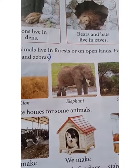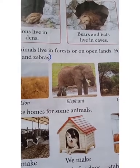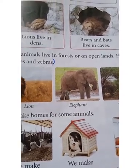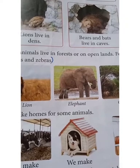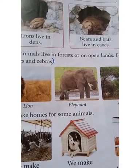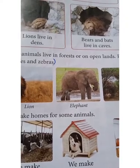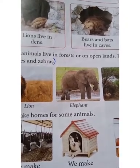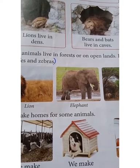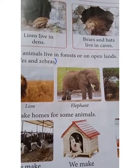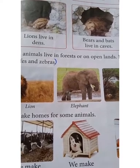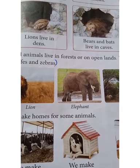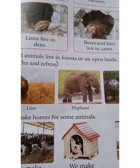Animals can move about from one place to another place. Plants have seeds — this is the spread of seeds.